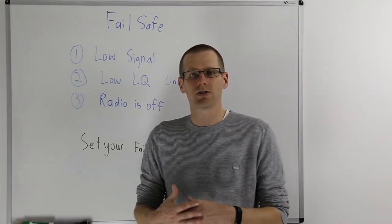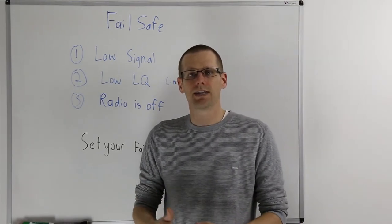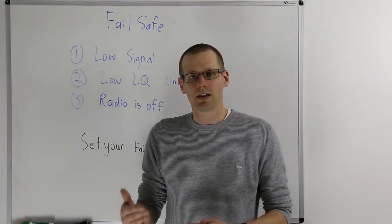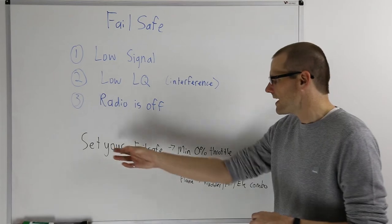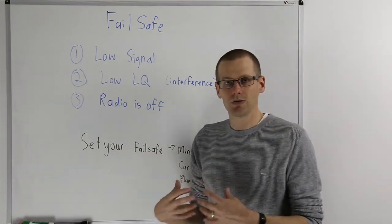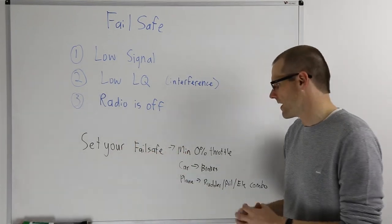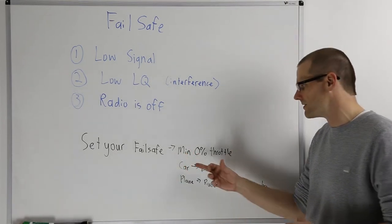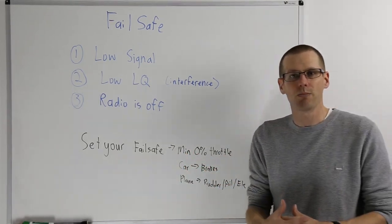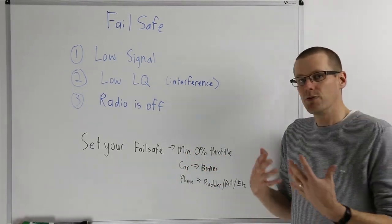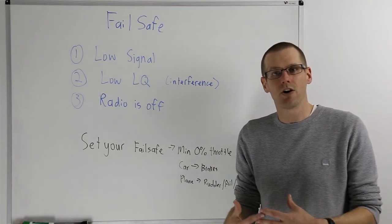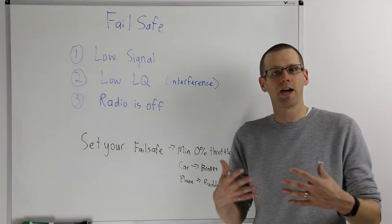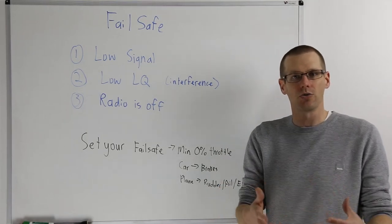If you have an airplane, you want to make sure that at the very least that engine or that electric motor is going to go to 0% throttle. If it does not do that, you need to set your fail safe. As we discussed, a minimum of 0% throttle is the requirement for essentially any RC. If you have a car, you want the brakes to be applied so that car can slow down and not become a threat if it's not under the control of yourself.